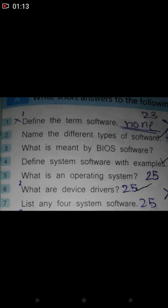Number five: what is an operating system? The answer to this question is on page number 25. Number six: what are device drivers? The answer to this question is on page number 25. Number seven: list any four system software. The four system softwares, you will see the answer on page number 25.